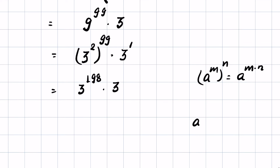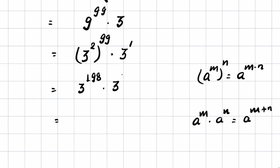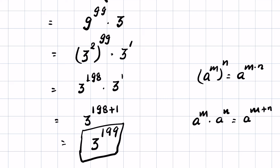Now when a raised to the power m times a raised to the power n, this identity can be written as a raised to the power m plus n. So we have 3 raised to the power 198 plus 1, which is equal to 3 raised to the power 199. This is our answer.